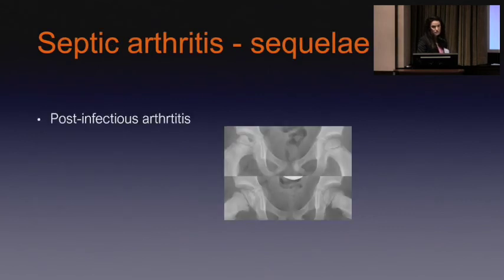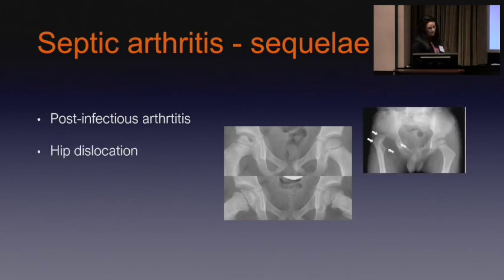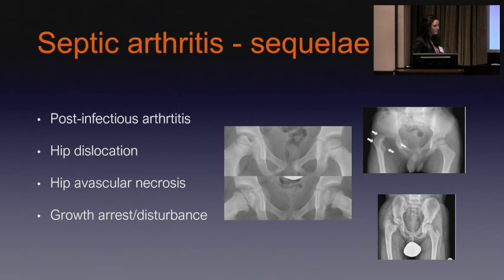The reason we're so concerned and treat this as such an emergency is to avoid terrible late complications. Post-infectious arthritis — a hip that should be nice and spherical, fitting beautifully into the cup, instead has jagged edges and divots. Long-standing untreated infection can cause actual hip dislocation, avascular necrosis, and growth disturbance. Bottom line: bad things for all these kids.